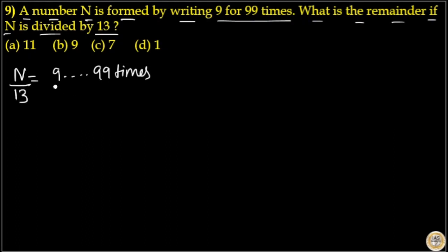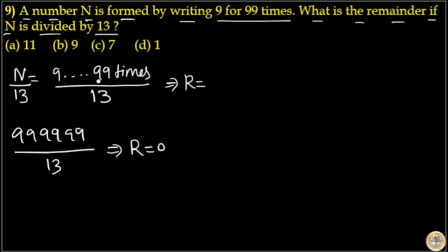That is the remainder of 9 repeated 99 times divided by 13. 9 repeated 6 times is completely divisible by 13, that means in this case the remainder is 0.